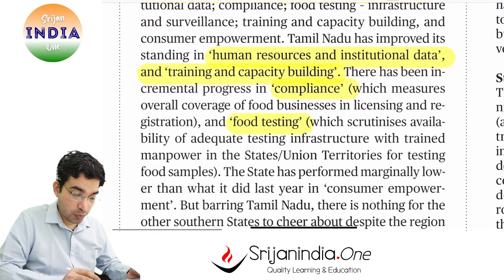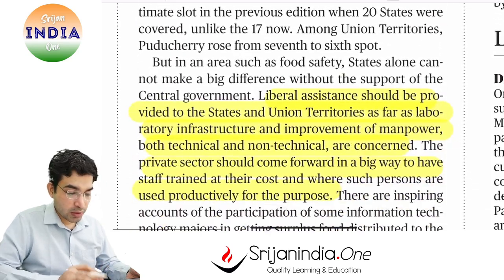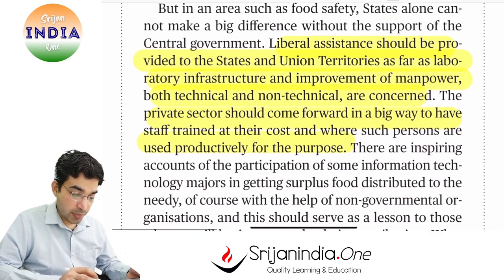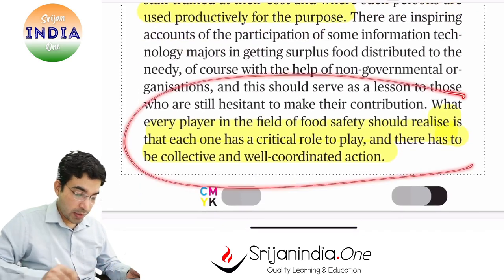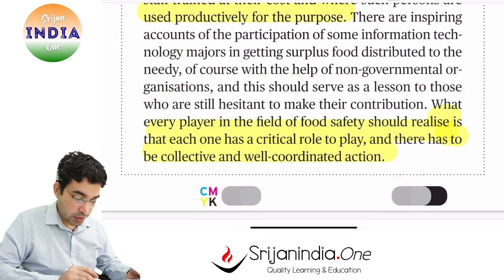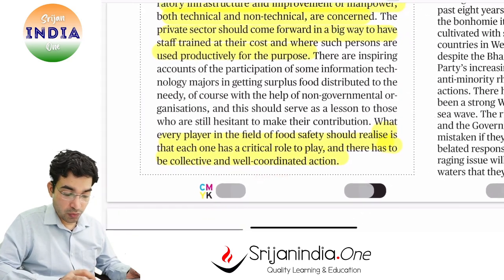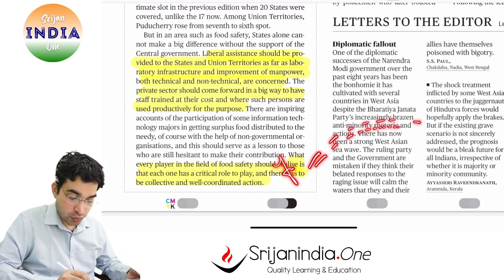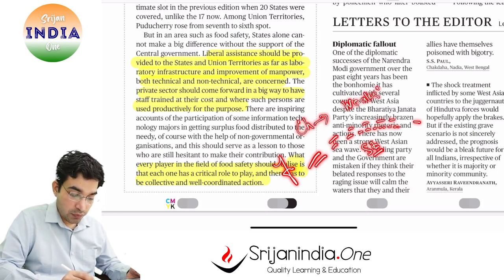Tamil Nadu did well in human resources, institutional data, compliance, and food testing — overall a good result because a culture of food safety and security is being built. Liberal assistance will be needed to carry this forward. Every player in food safety should realize that each one has a critical role to play — there must be collective and well-coordinated action. A food safety chain is only as strong as its weakest link.